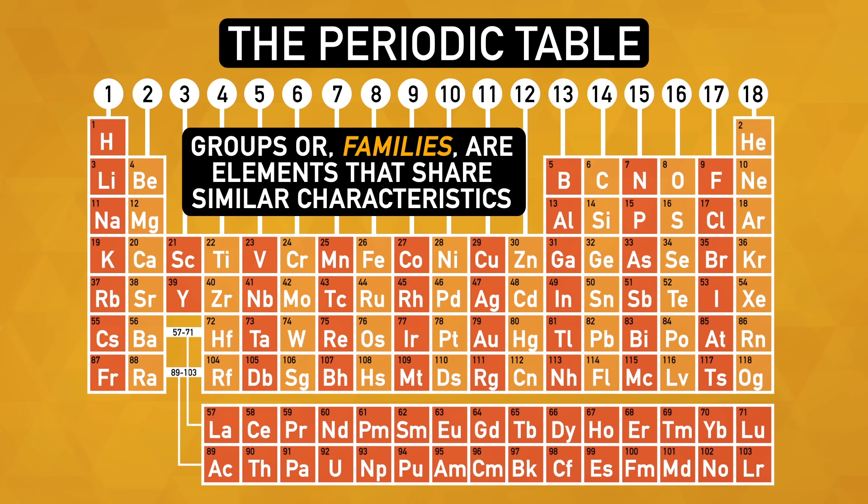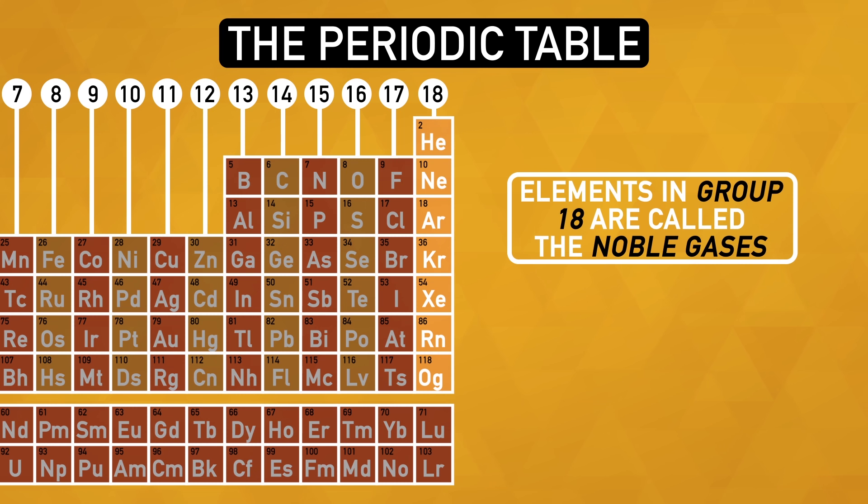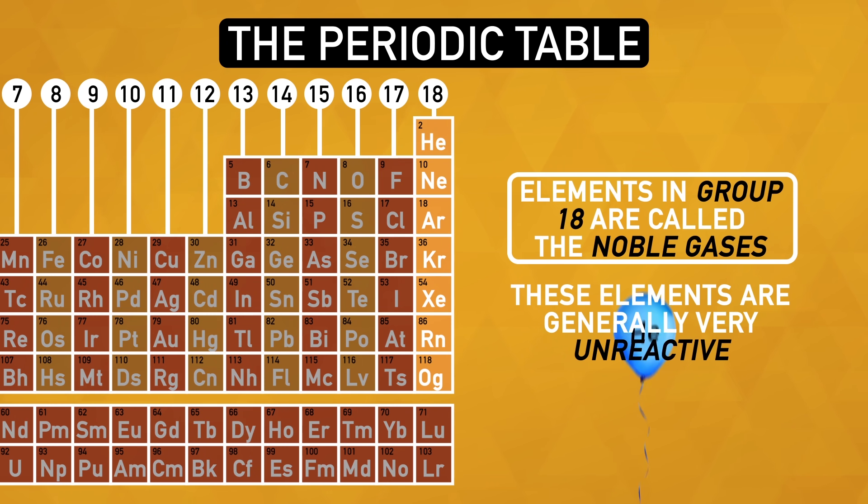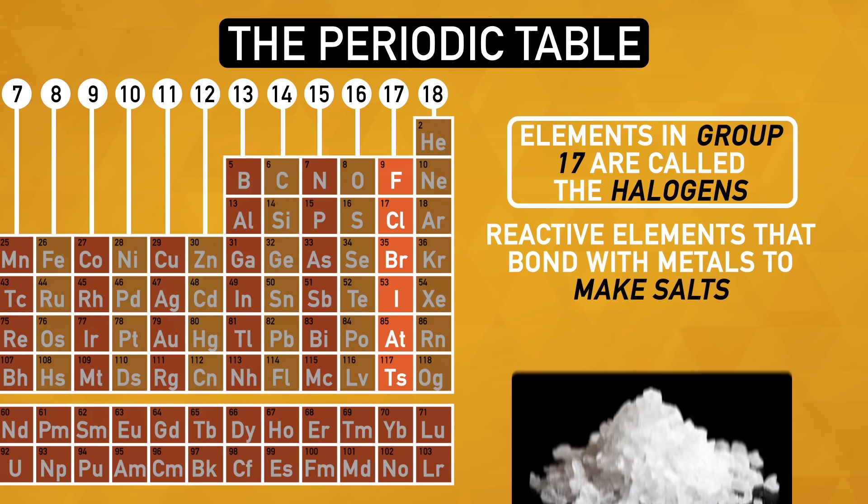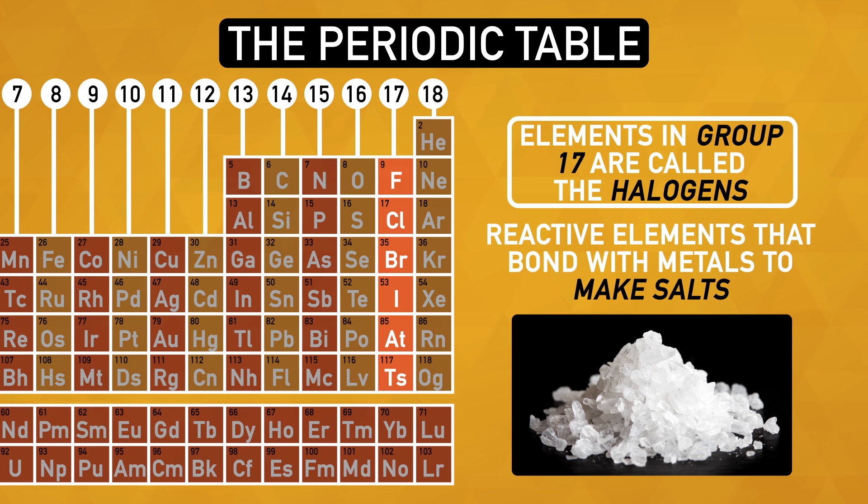For example, elements in group 18 are called the noble gases. These are a collection of elements that are generally very unreactive, like helium in birthday balloons. Next door in group 17, also known as the halogens, we find reactive elements that may bond with metals like sodium and potassium to make salts.